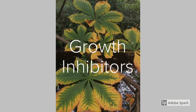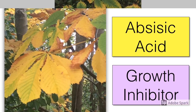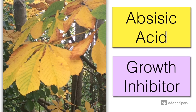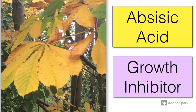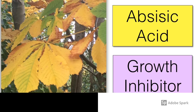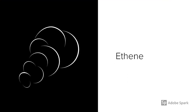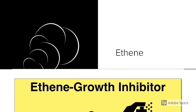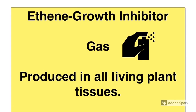Growth inhibitors slow down or prevent growth. Abscisic acid is one growth inhibitor and it's produced in many areas in the plant — the leaves would be one example. Ethene is another example of a growth inhibitor, and it's very unusual because it's in gas form.